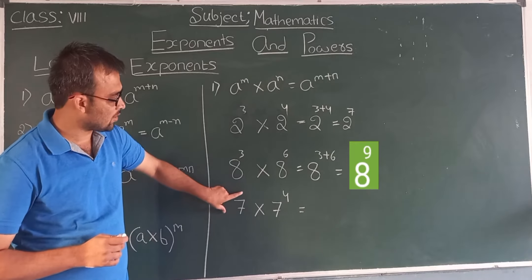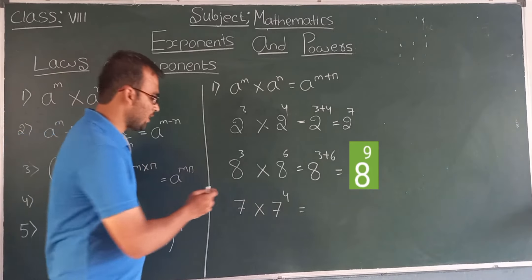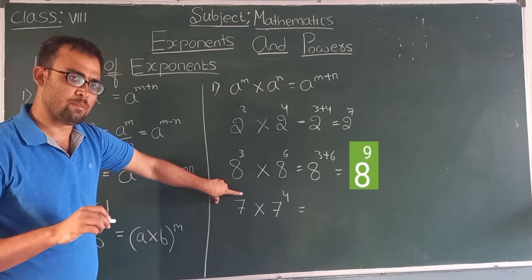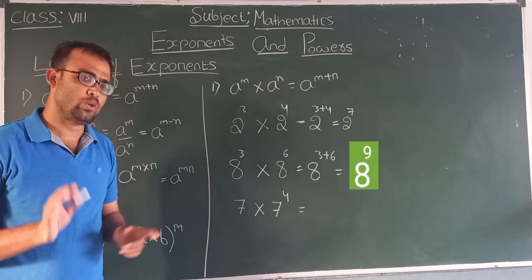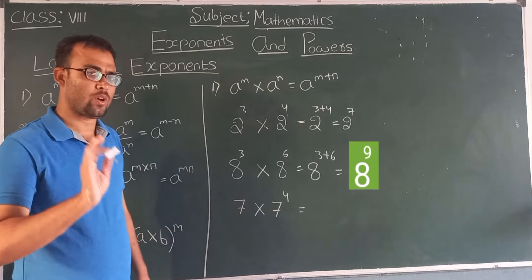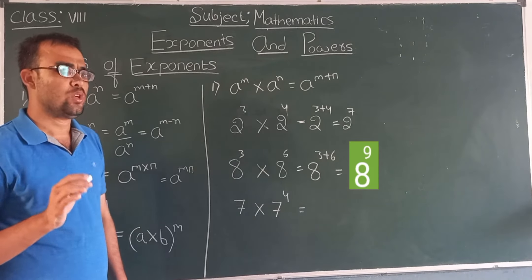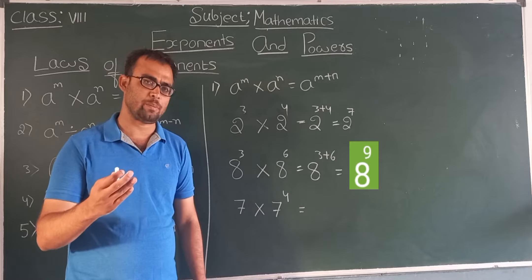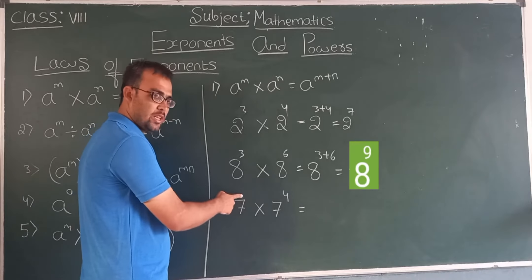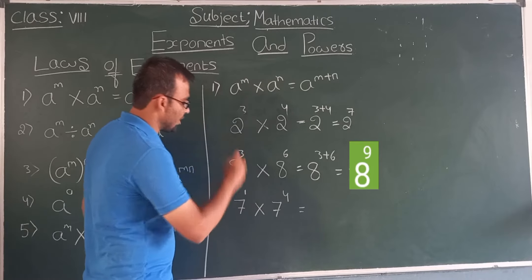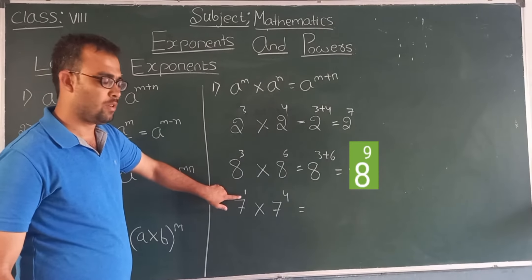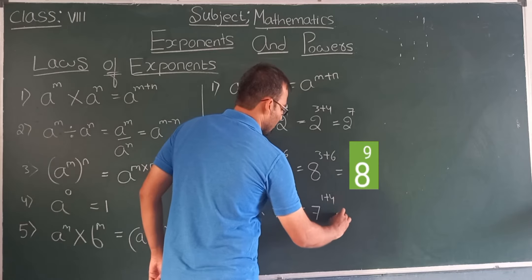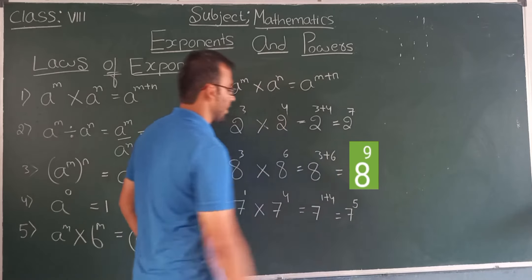But look here students — is there any power on this 7? If you think there is no power, you are wrong. Whenever you come across any single number with nothing written as the power, always 1 will be there. So the power is always 1, even when nothing is written. Therefore, this becomes 7 to the power 1 plus 4, which equals 7 to the power 5.